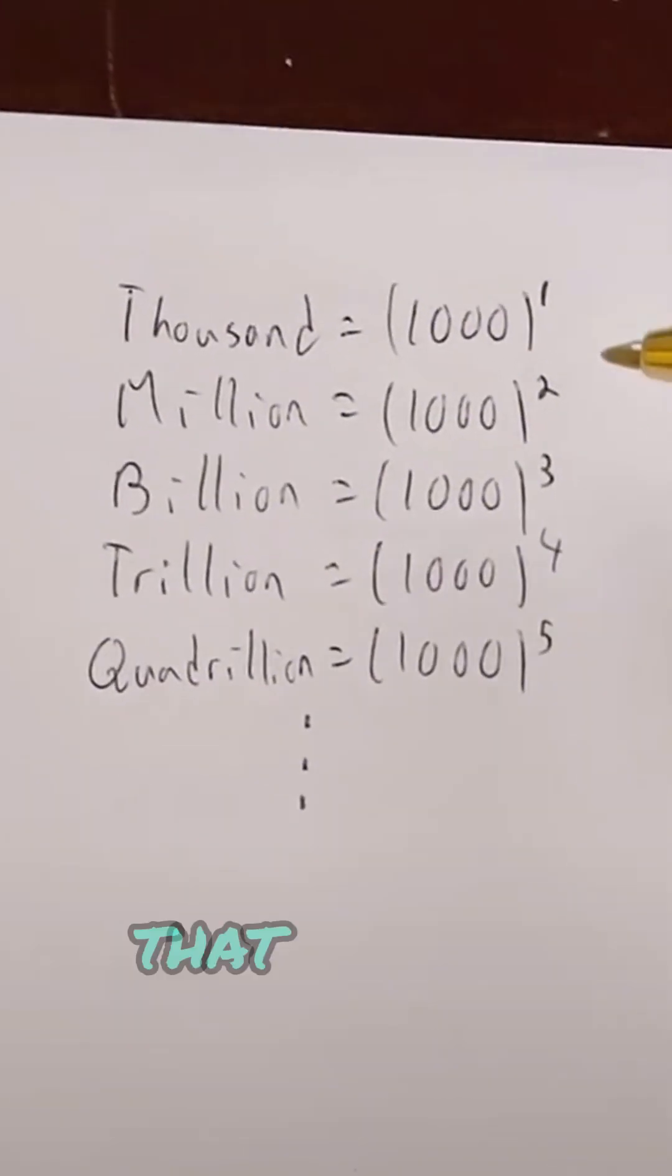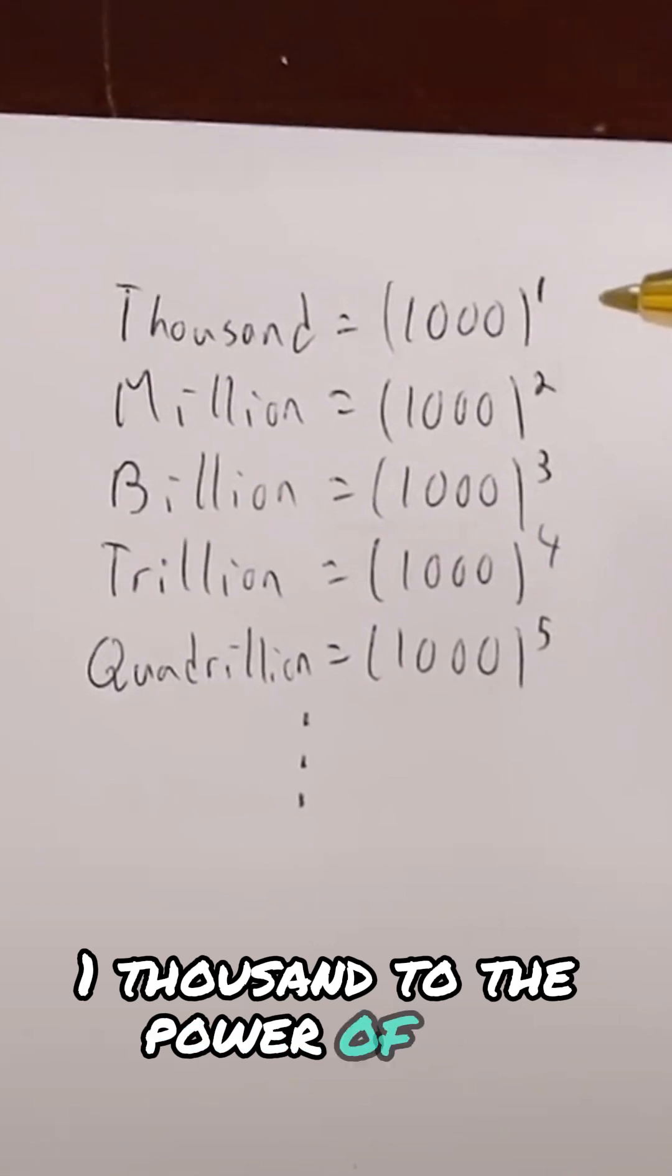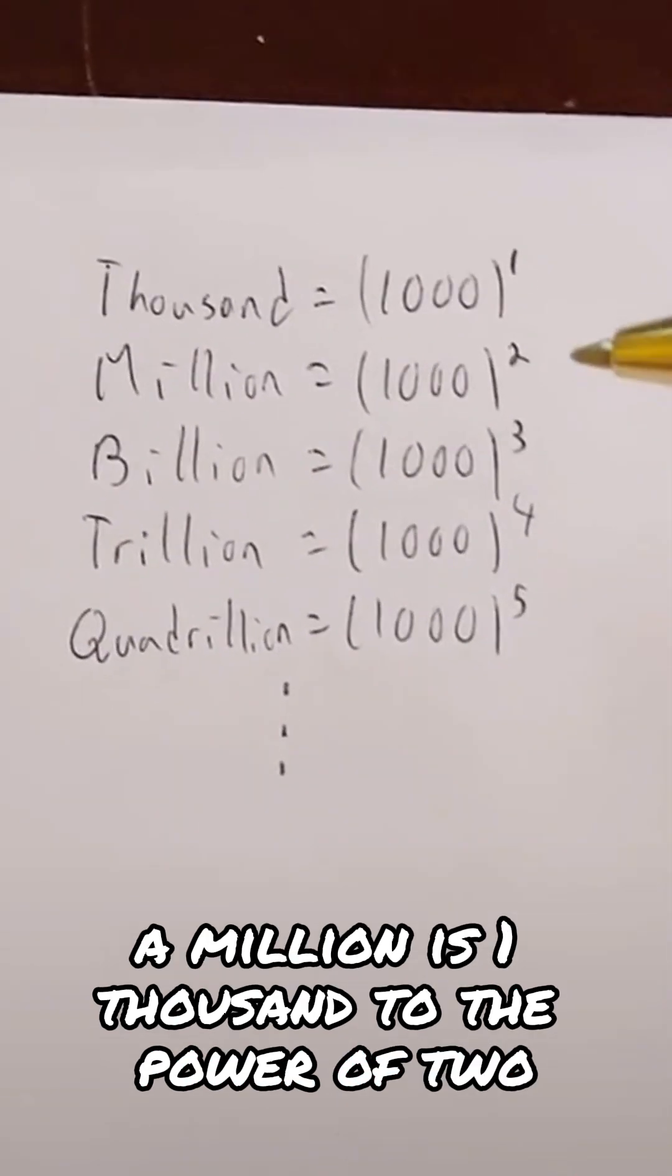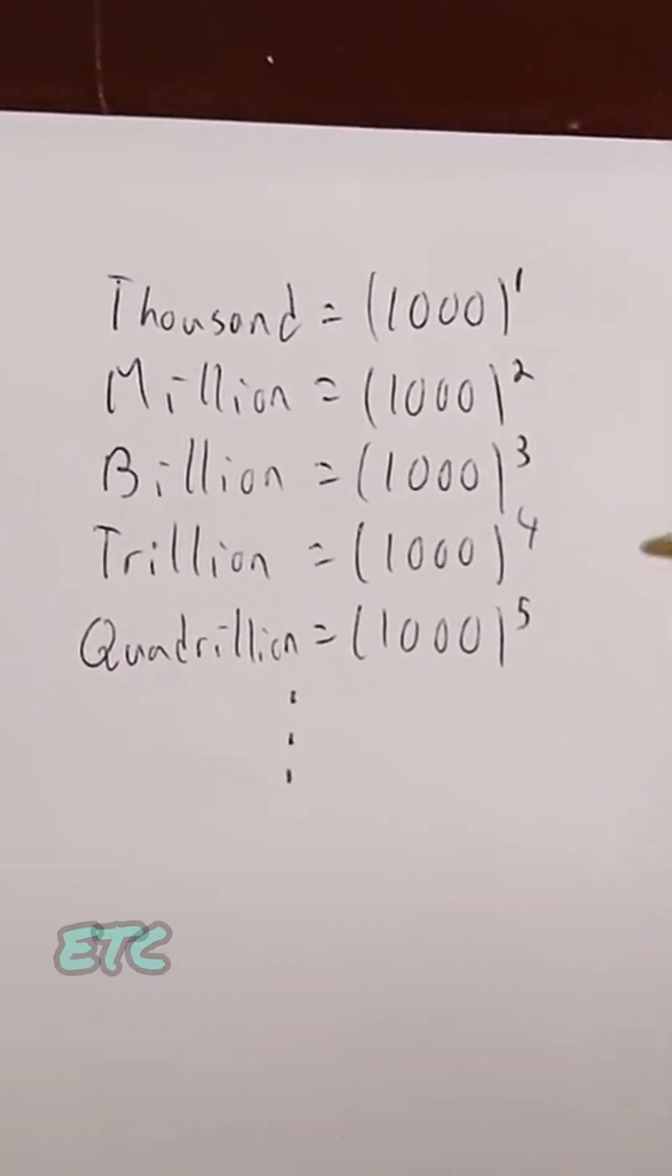In the U.S., we use a base of thousands to count. That means a thousand equals a thousand to the power of one, a million is a thousand to the power of two, a billion is a thousand to the power of three, etc.